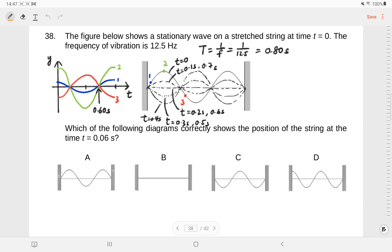So at 0.6 seconds, where are they? From this graph, it is quite clear that at 0.6 seconds, they will be all at the zero displacement position. Equilibrium position.